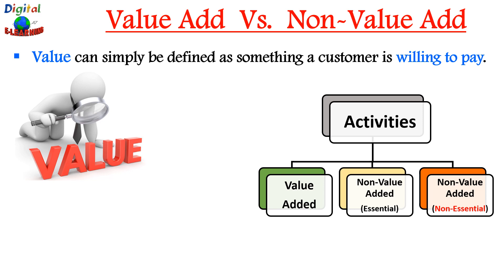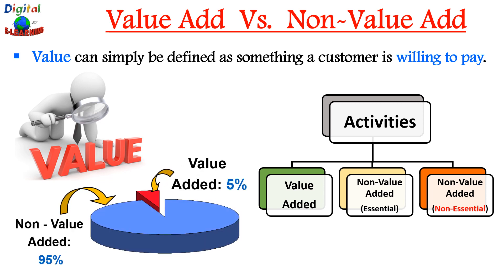The third category is non-value-added and non-essential — activities which do not add any value to the product or service, are not required by business operations, and can be immediately eliminated. This includes rework, delayed starts, or handling of materials between different operations. Generally, 95% of all activities you do are non-value-added, and only 5% are value-added.